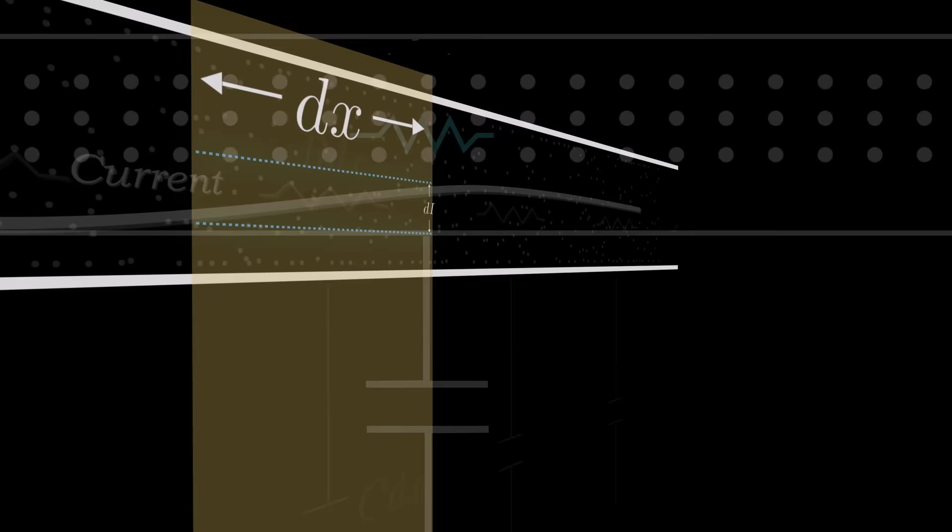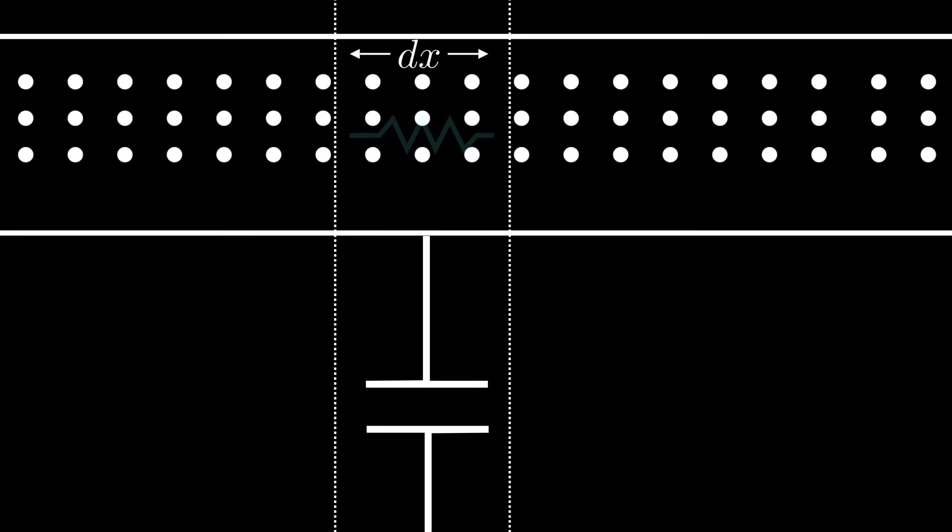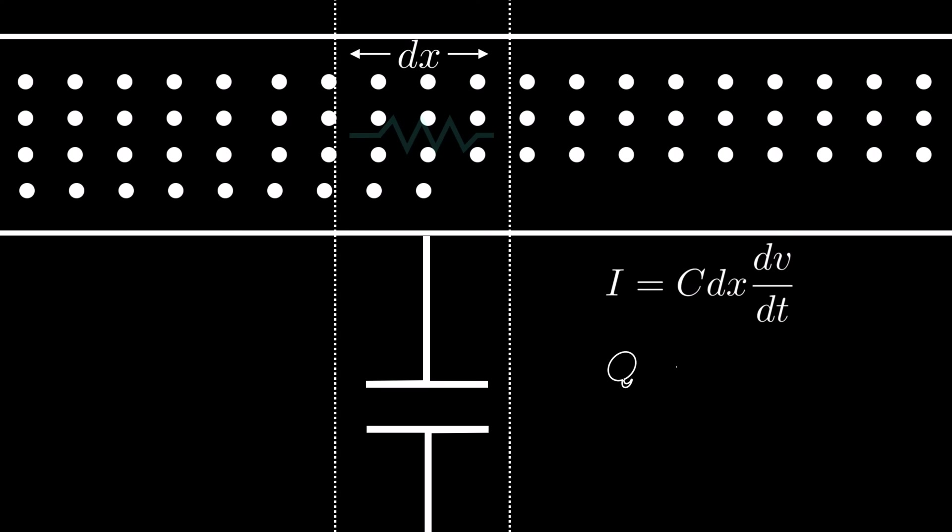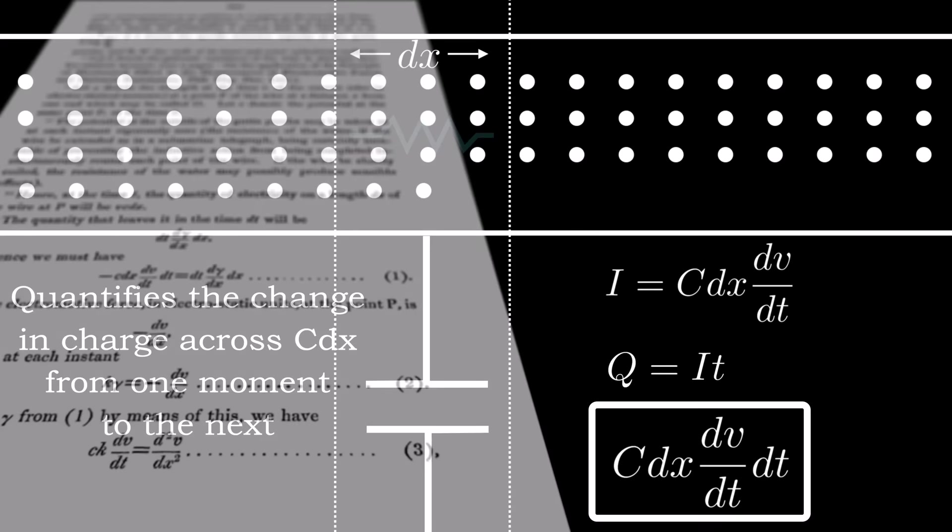To the capacitor, the sudden increase in current along the line looks like a sudden increase in current across itself over a period of dt. In other words, new charge appears over the time period dt. And Thomson used basic expressions for capacitor current and charge to quantify the new charge due to this event.